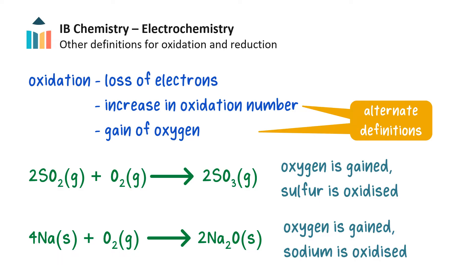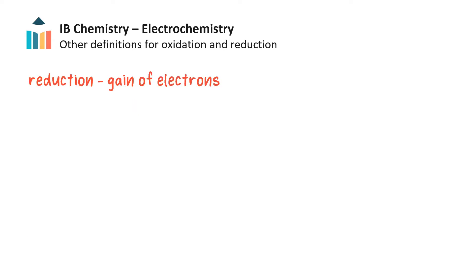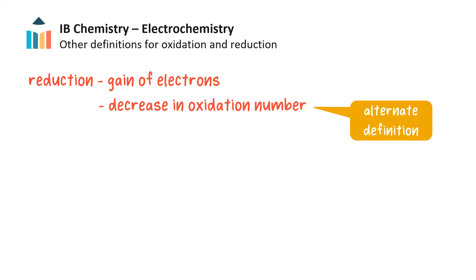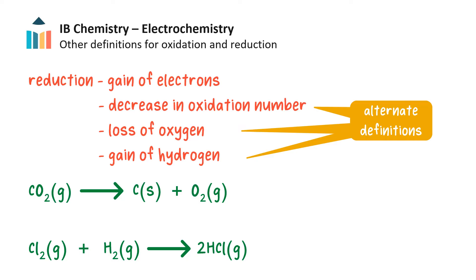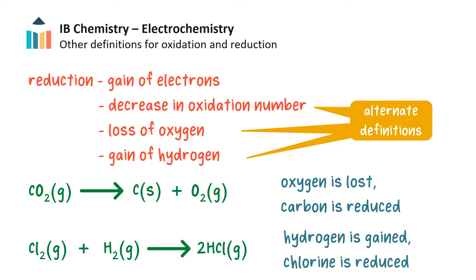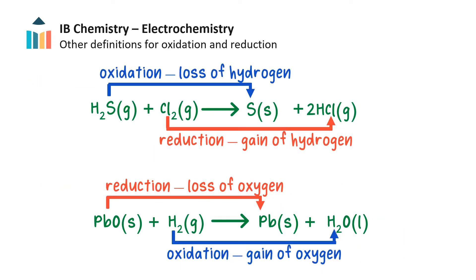In the first equation, sulfur in sulfur dioxide gains oxygen and is oxidized. In the second equation, sodium gains oxygen and is oxidized. If we were to check the oxidation numbers in these equations, we would find that oxygen is reduced in both cases. We have also seen that reduction is the gain of electrons or the decrease in oxidation number — however it can also be considered to be the loss of oxygen or the gain of hydrogen. In the first equation, carbon dioxide loses oxygen and so carbon is reduced. In the second equation, chlorine gains hydrogen and so is reduced. You can pause the video to examine these slightly more complex examples of oxidation and reduction regarding oxygen or hydrogen loss or gain.